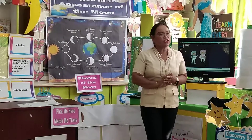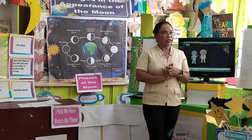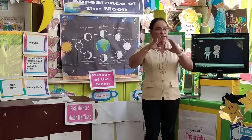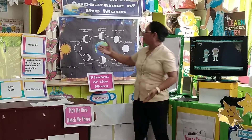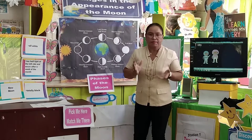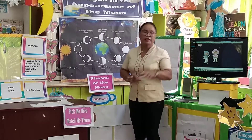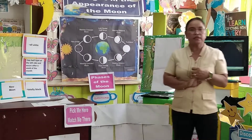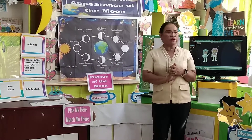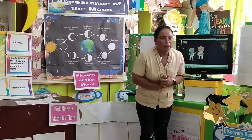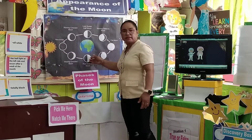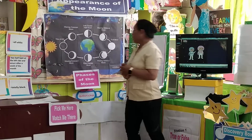Why do we say it's waxing? Anna — waxing because from smaller, it is getting bigger — from nothing, the moon is getting bigger and bigger. The third phase — what is it? Anna — first quarter. Correct. How will you describe first quarter? It is a half moon at the right. You can see that the lighted part of the moon is on the right side.